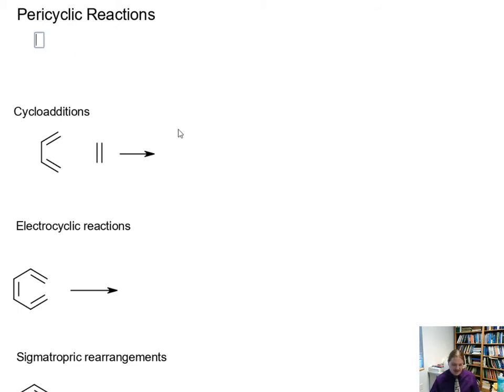Pericyclic reactions are a class of reactions that have two defining features. One, their mechanisms are concerted. Two, they have cyclic transition states. These are the two features that all pericyclic reactions have in common. There are different classes of pericyclic reactions depending on the pattern of bond forming and bond breaking and how many reactants are involved.